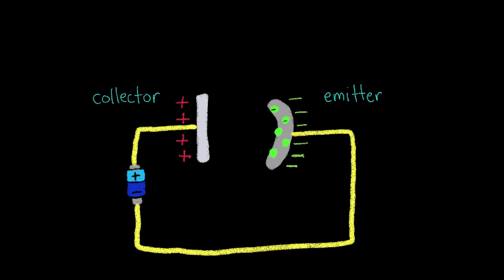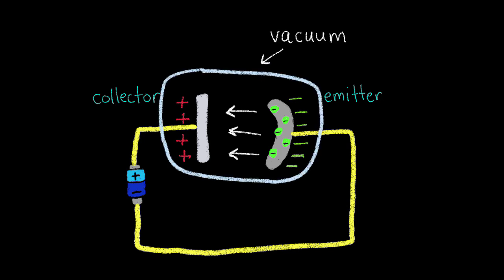Now, the electrons in the emitter want desperately to jump across to the collector. Opposite charges attract, so the negatively charged electrons want to get to the positively charged collector. But there's a catch. This setup is placed inside a vacuum. Nothing's going anywhere. The electrons are stuck to their metal plate. No one can move.